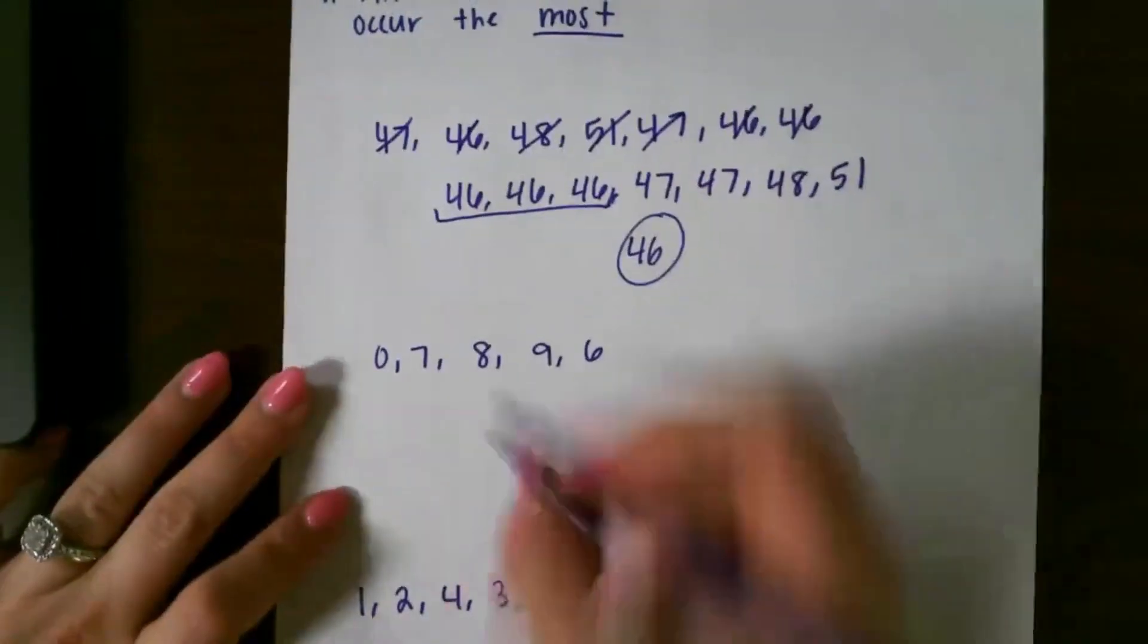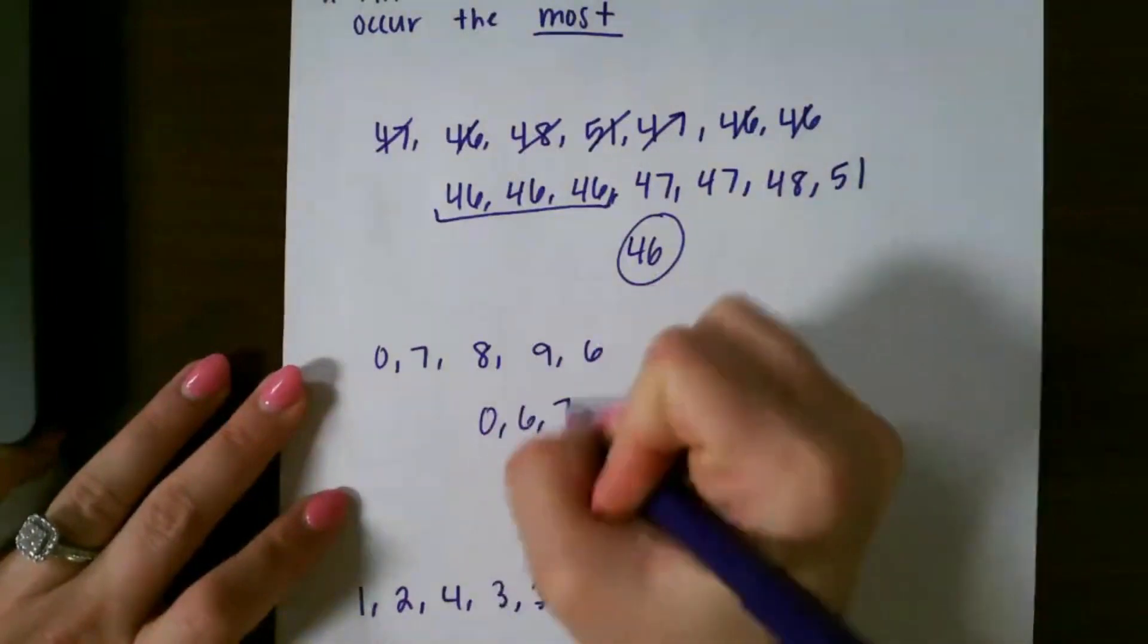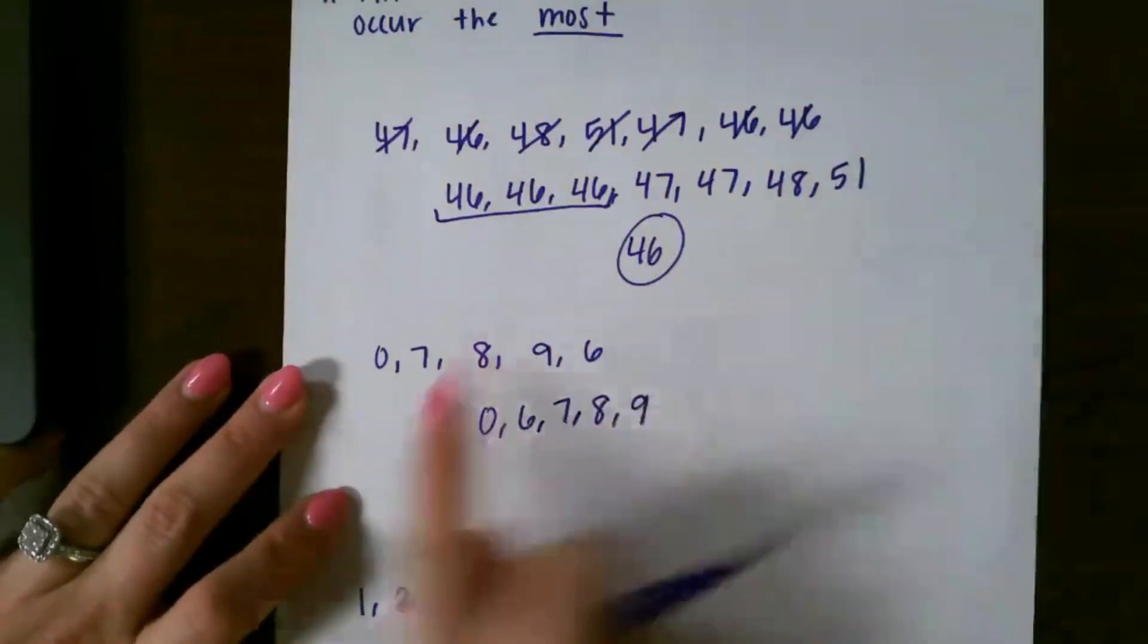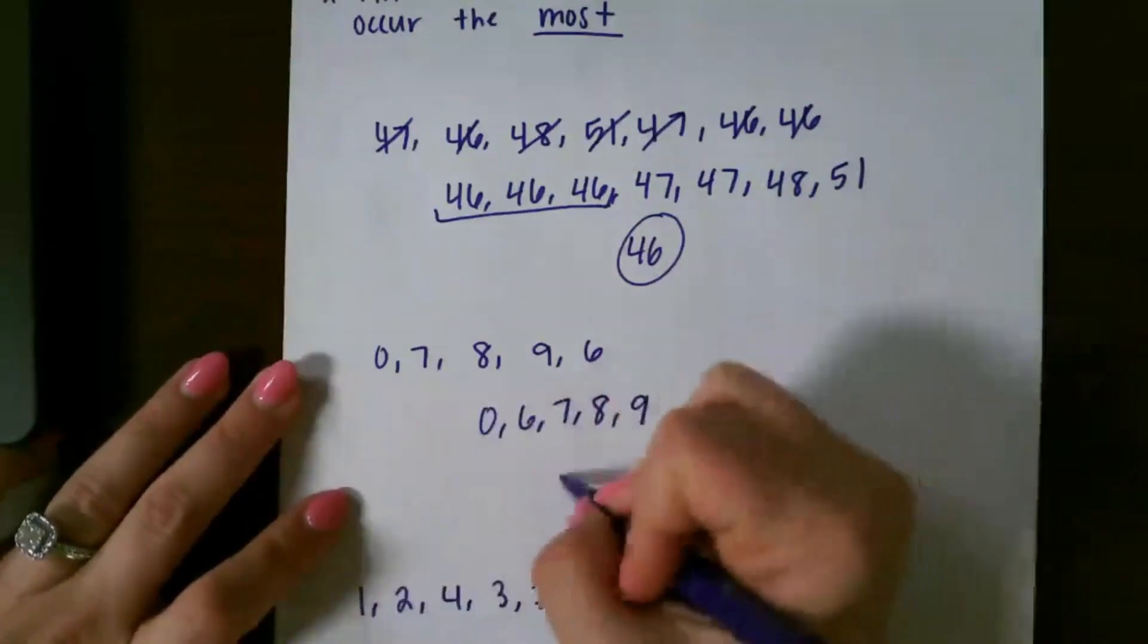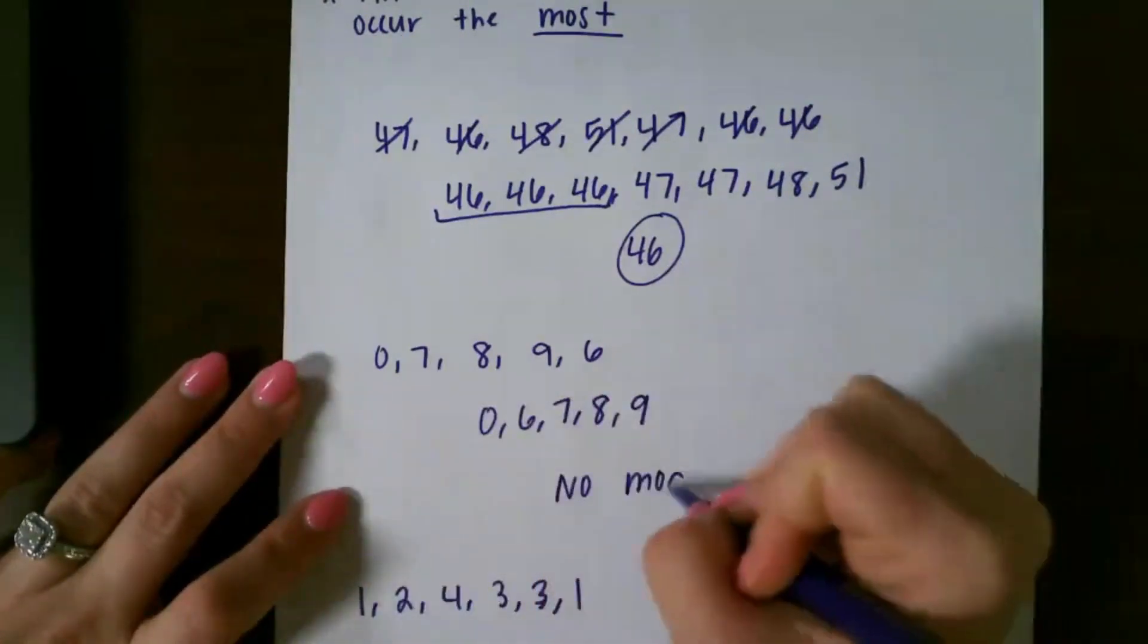For the next one, if I put them in order from least to greatest, and this one's pretty easy to see, but I don't have a number that shows up more than once. So this would be no mode.